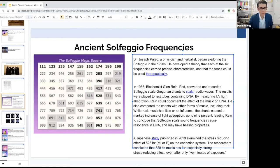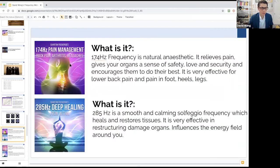What we've done is we've created a whole album for each frequency. 174 Hz is for pain management, back pain, arthritis, and headaches. 285 Hz is for deep healing from within - a soothing and calming healing frequency.